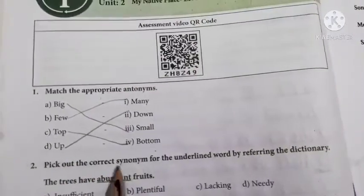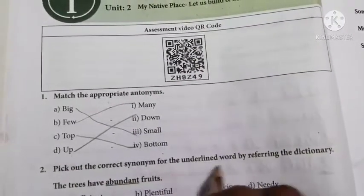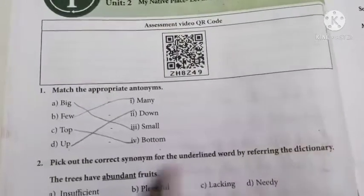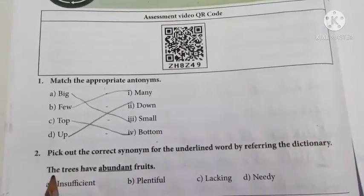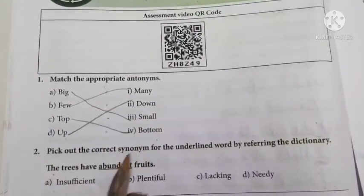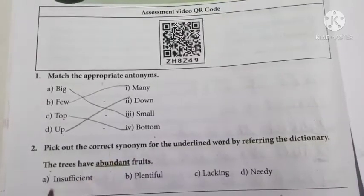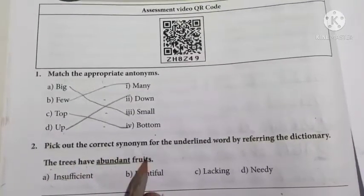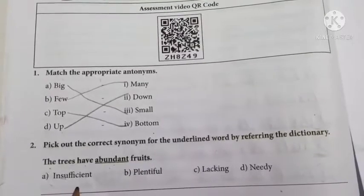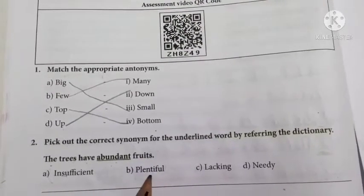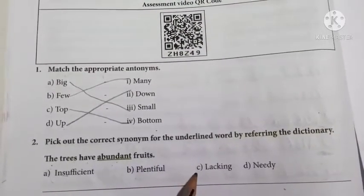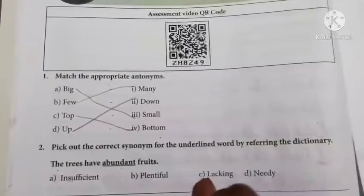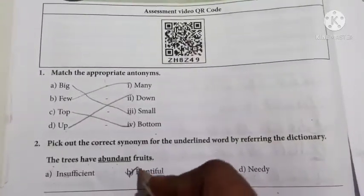Second one: Pick out the correct synonym for the underlined word by referring to the dictionary. The underlined word's meaning — 'The trees have abundant fruits.' Options: A. Insufficient, B. Plentiful, C. Lacking, D. Needy. Answer: Plentiful.